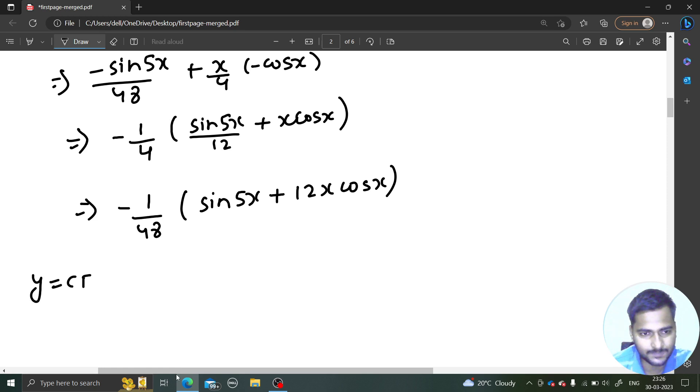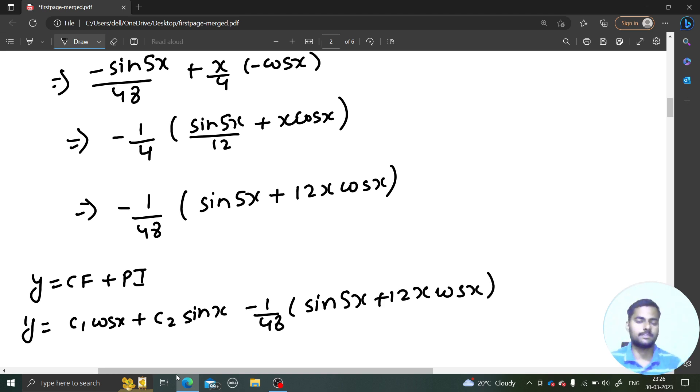Finally, y equals CF plus PI. So y will be equal to c₁cos(x) + c₂sin(x), and here comes your PI which is -1/48 sin(5x) + 12x·cos(x). This is your final answer: y = c₁cos(x) + c₂sin(x) - 1/48 sin(5x) + 12x·cos(x).